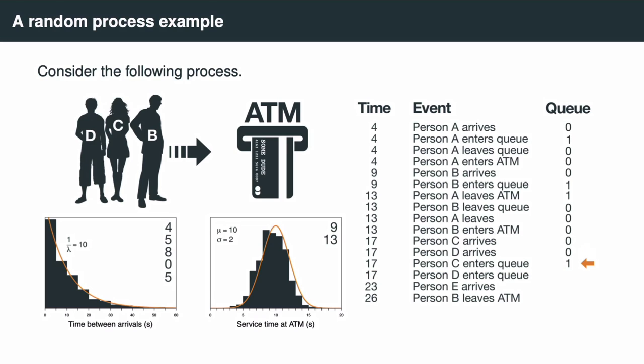We now get to Person C entering the queue, which is the next event in the list. We update the tally of the queue.